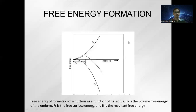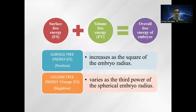Next is free energy formation. The diagram shows the free energy of nucleus formation as a function of its radius. Fp is the volume free energy of the embryo, Fs is the free surface energy, and R is the resultant free energy. The overall free energy R is the summation of the surface free energy Fs and the volume free energy Fp.